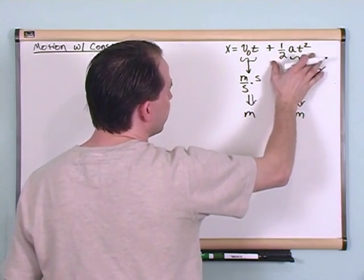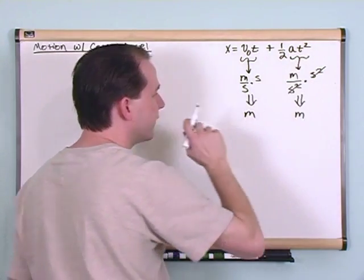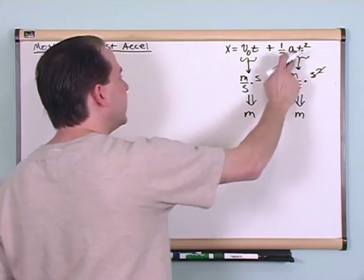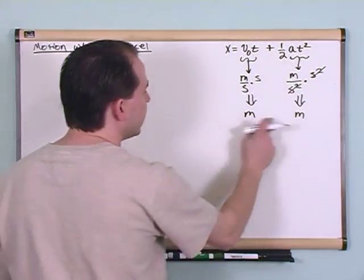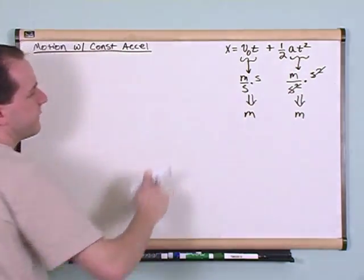And this part of the equation is predicting how far do I move because of the speeding up or the slowing down, i.e. the acceleration. And when you take these two things and you add it together, what you get is the final result.